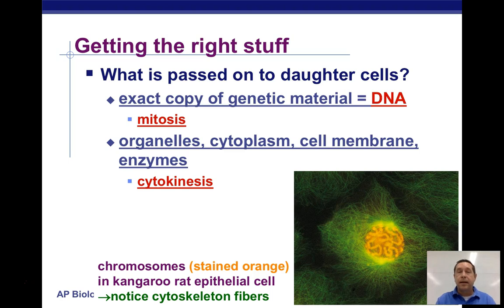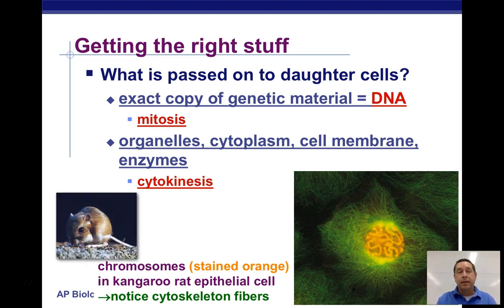Once the DNA divides — and that's what mitosis really is, the division of the nucleus — then we have to split the cell, and that's cytokinesis. That usually happens at the end of mitosis, and sometimes it may actually begin during the ending stages of mitosis.